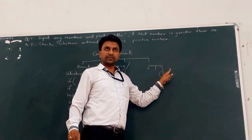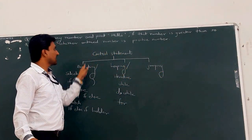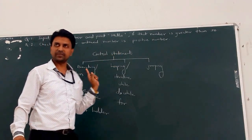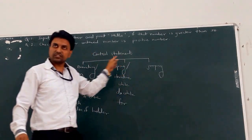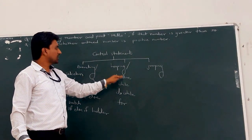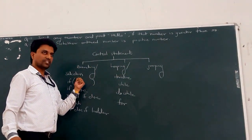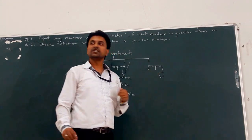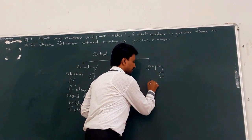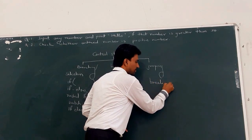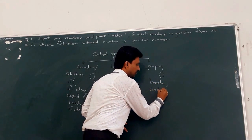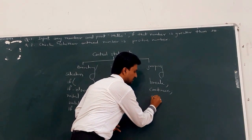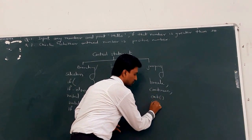The next type is jumping statements. All these types are called control statements. Jumping statements are: break, continue, exit, and goto.